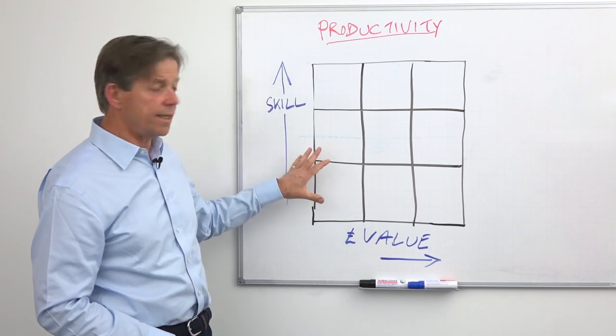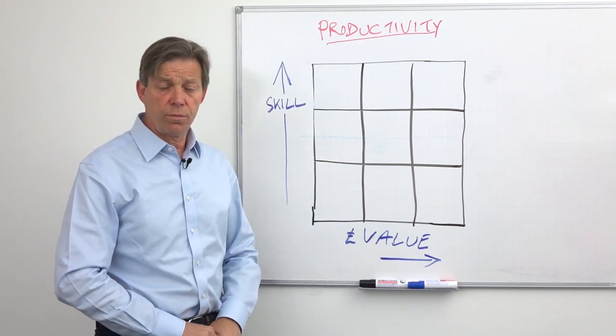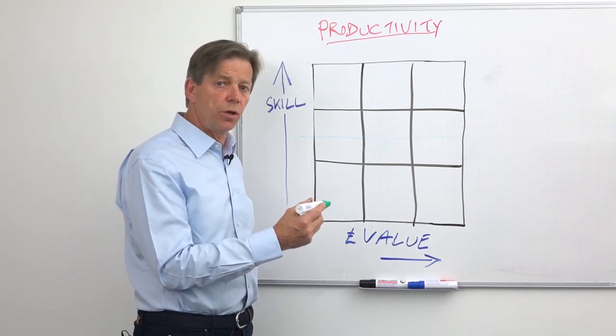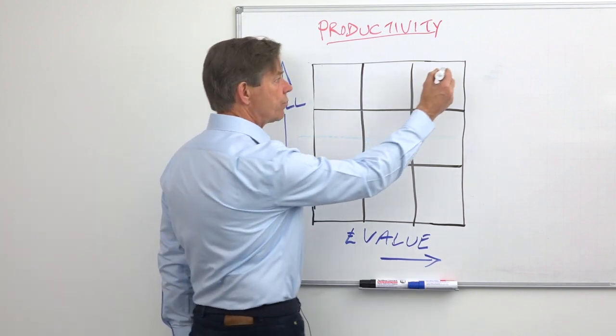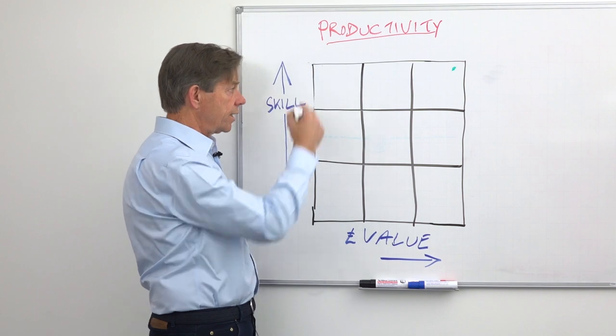The first step is to identify on this matrix where each task sits. So where you are winning new business, for example, that is worth a lot of money, it may sit right up here in the top right hand corner of the highest value and the highest skill.